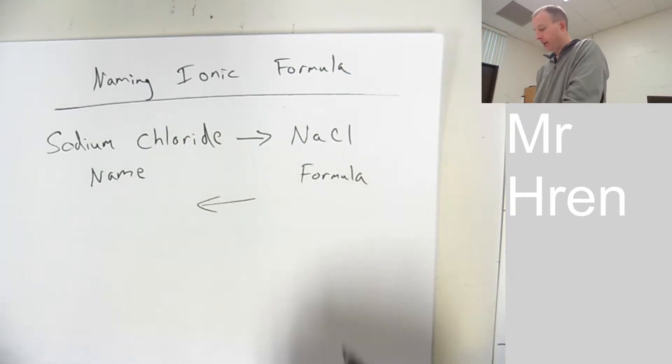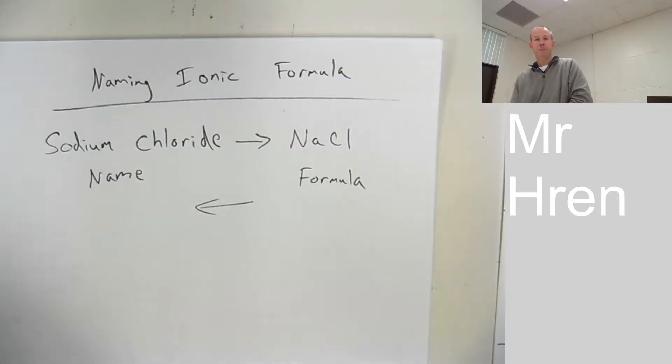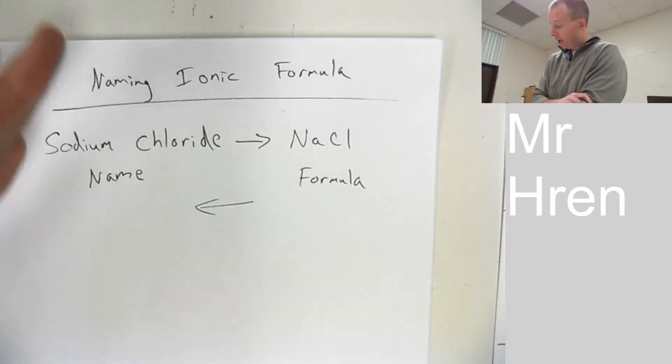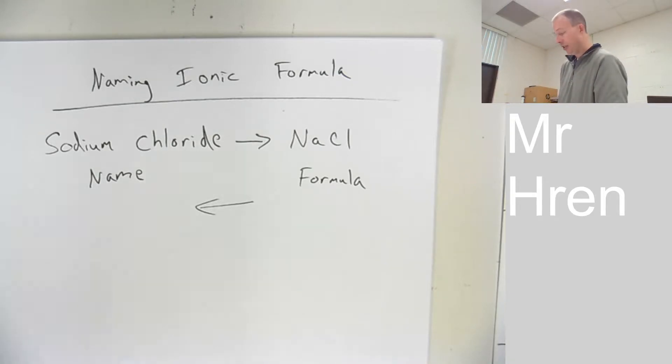Now, today, we're going to go the other way. I'm going to give you a formula. You're going to write the name. That's what we're going to do now. Thankfully, we're keeping this part simple in this class. There's a little more to it than what I'm going to show you right now, in that you would have to sometimes write Roman numerals if you have transition metals in the names, but we're just not doing that part. We're just not doing that.